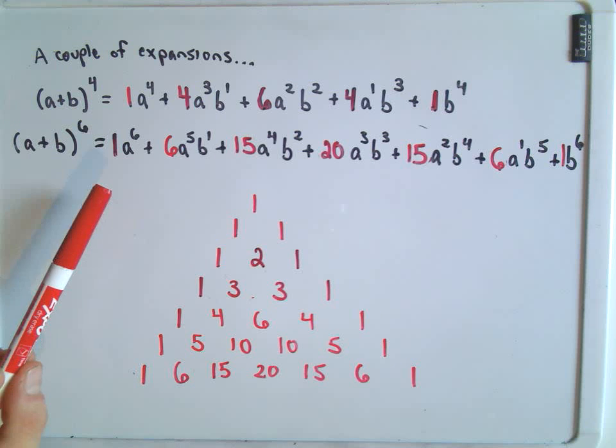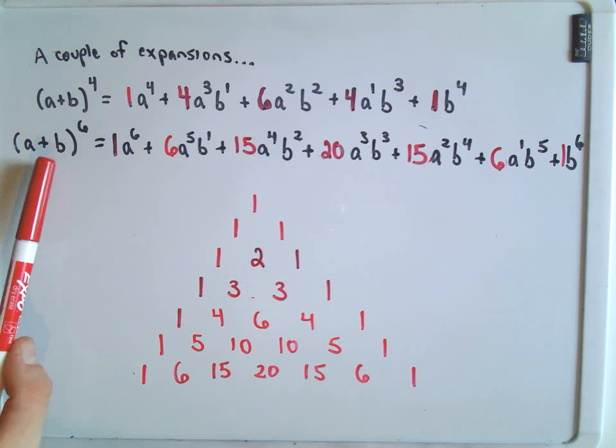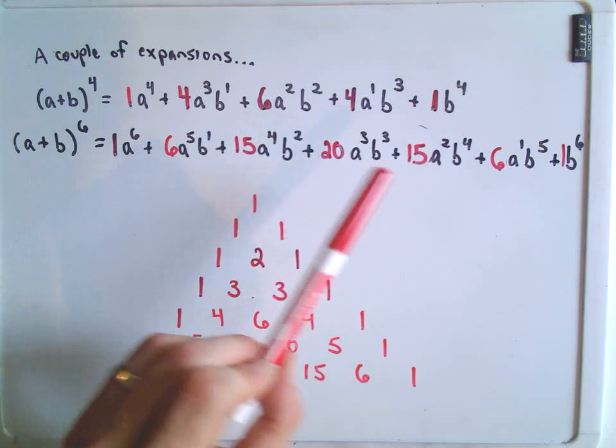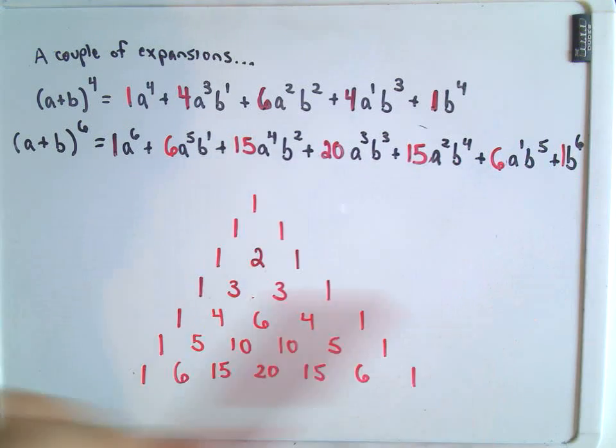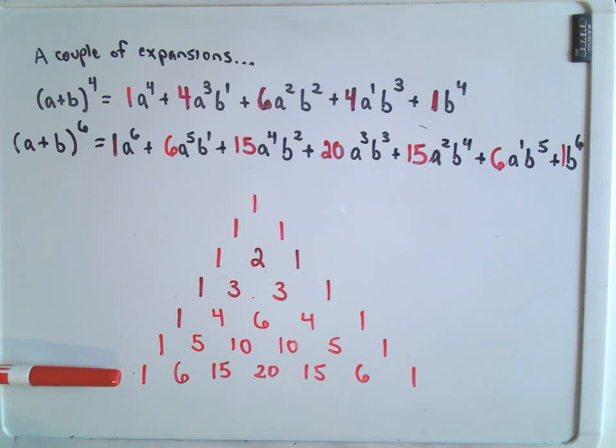And hey, look again at the coefficients. On my a plus b to the 6th power, we had 1, 6, 15, 20, 15, 6, and 1. And those are exactly the numbers in this row of Pascal's Triangle.